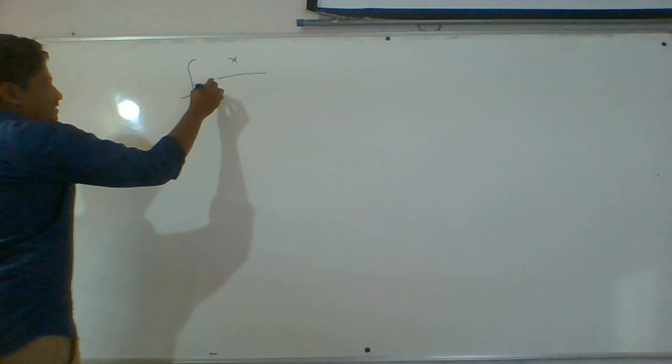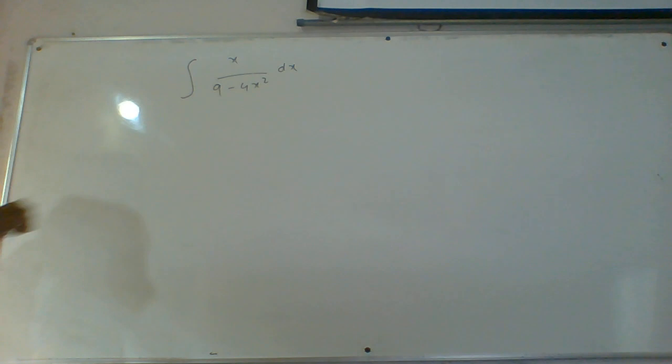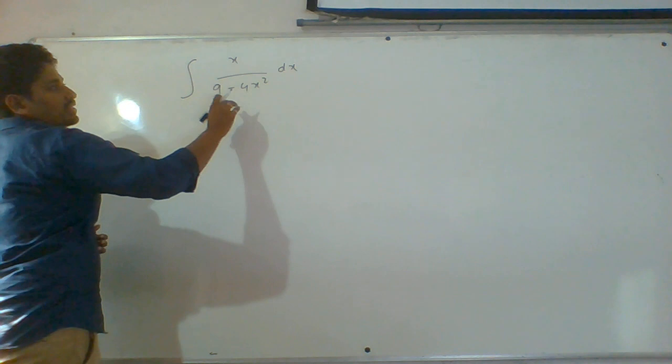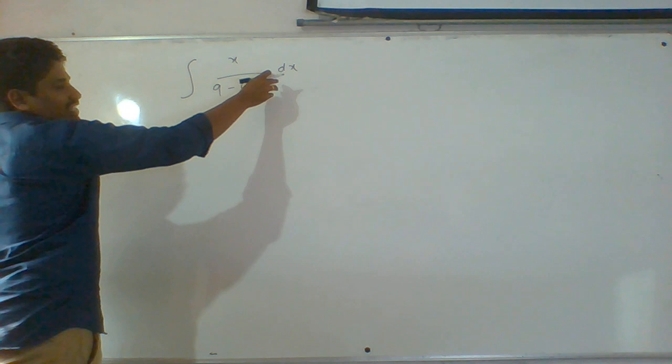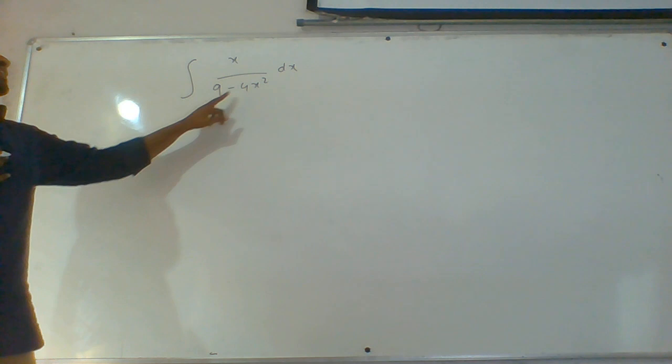See the next sum. Integral of x by (9 minus 4x square) dx. Here, what thing do we have to consider as t? If we consider 9 minus 4x square as t, the derivative of x square function is in terms of x, and we can convert the total function in terms of t by considering this as t.